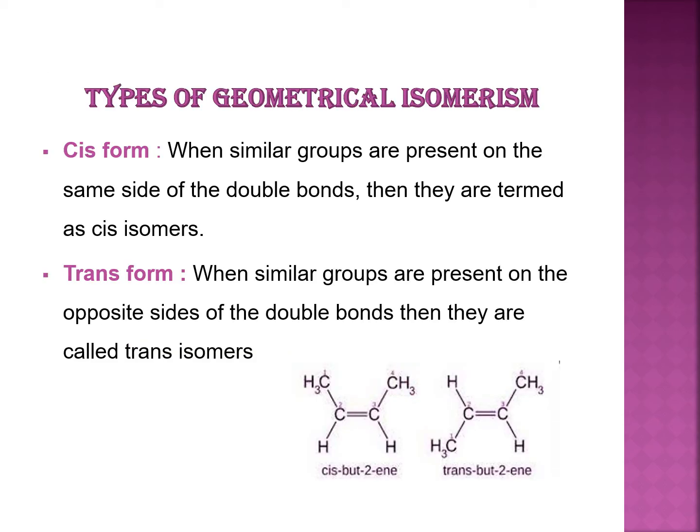Geometrical isomerism is further of two types: cis and trans. When similar groups are present on the same side of the double bond, they are termed cis isomers. When similar groups are present on the opposite side of the double bond, they are called trans isomers. In the cis form, both methyl groups are on the same side of the double bond; in the trans form, the methyl groups are on the opposite side.